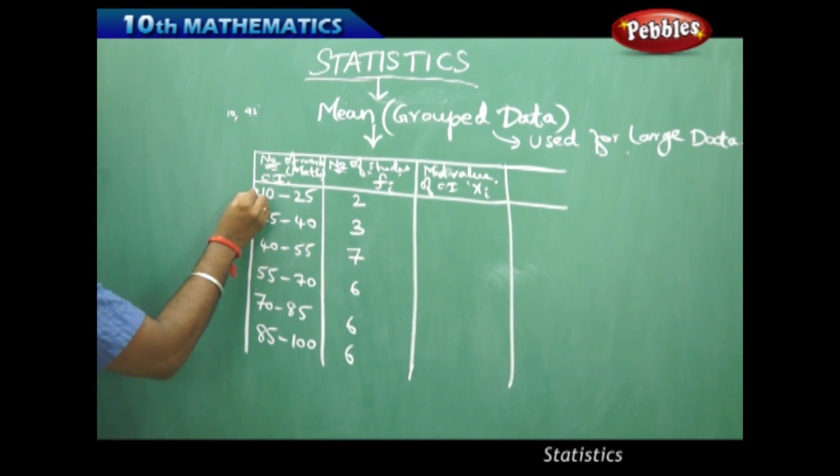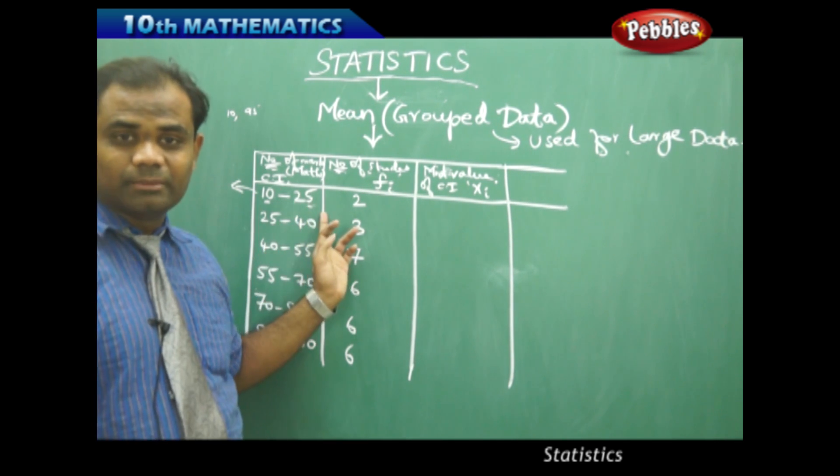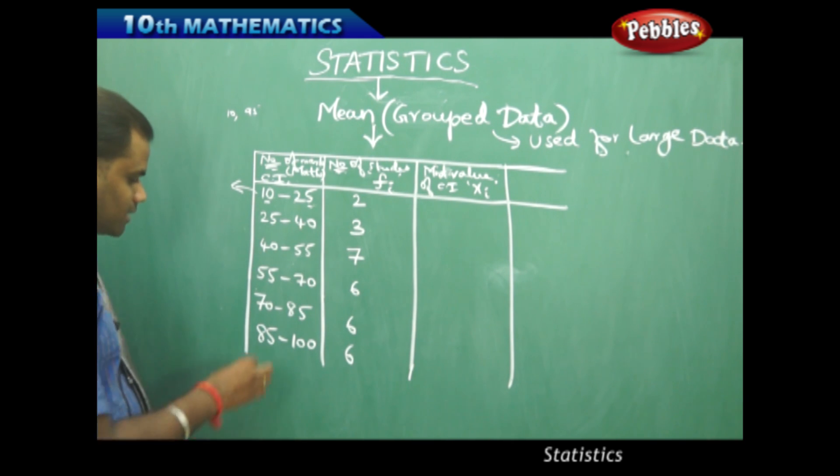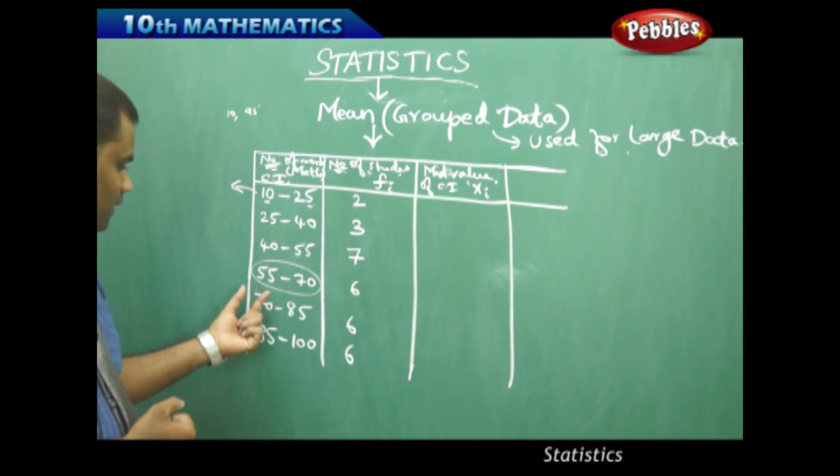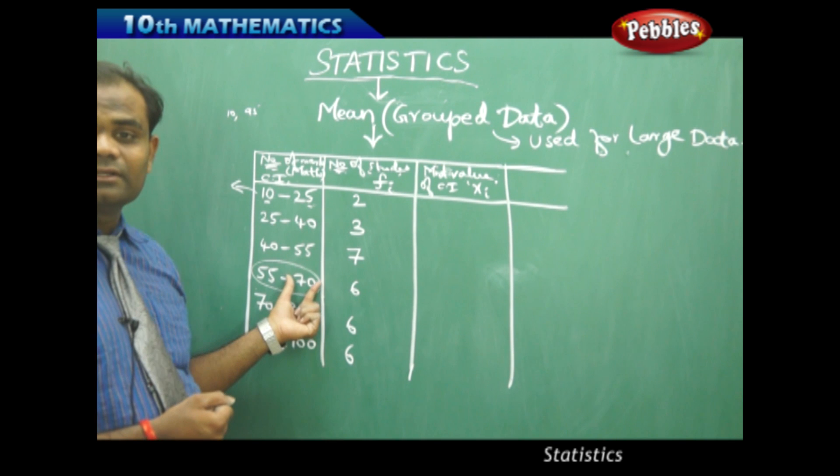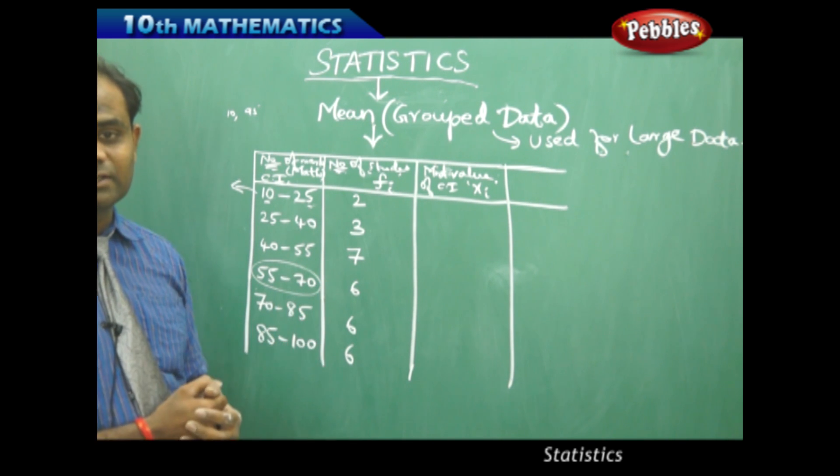Now what is the mid value of the class interval? If I just come back to this, my class interval with 10 to 25—this is called the lower limit and this is called the upper limit. So 10 is the lower limit of the class interval and 25 is the upper limit of the class interval. Say for example I take this class interval. Then I see that in this class interval ranging between 55 to 70, 55 is the lower limit and 70 is the upper limit is how we understand.